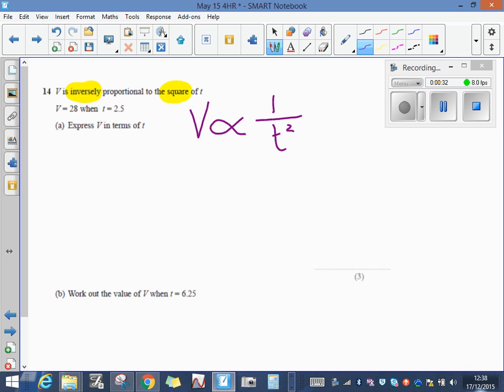If we write that as an equation using k, that's the same as V equals k times one over t squared. It's easier if you write that as V equals k over t squared.